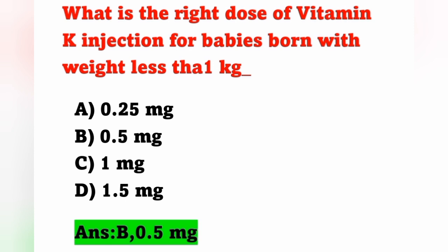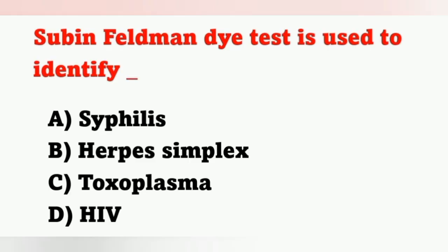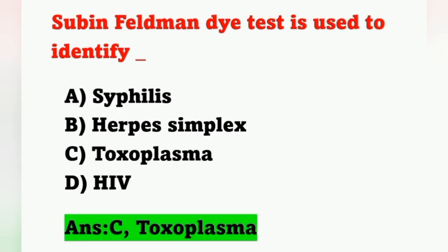Next question: Sabin-Feldman dye test is used to identify? Options: A) Syphilis, B) Herpes simplex, C) Toxoplasma, D) HIV. The Sabin-Feldman dye test is used to identify Toxoplasma. Option C is the correct answer.